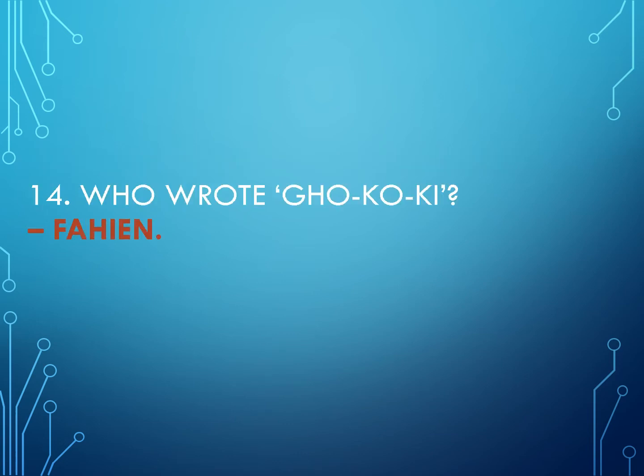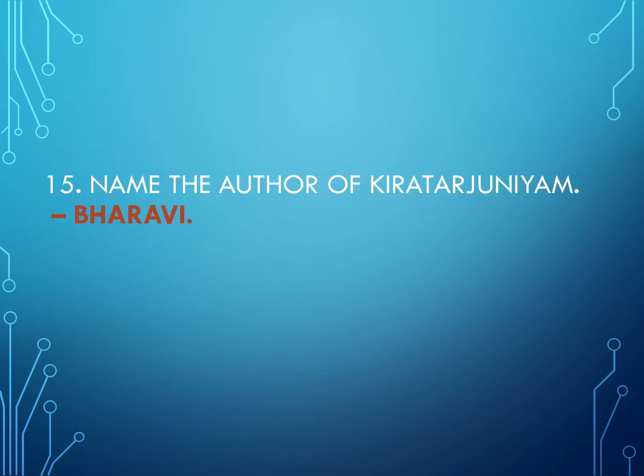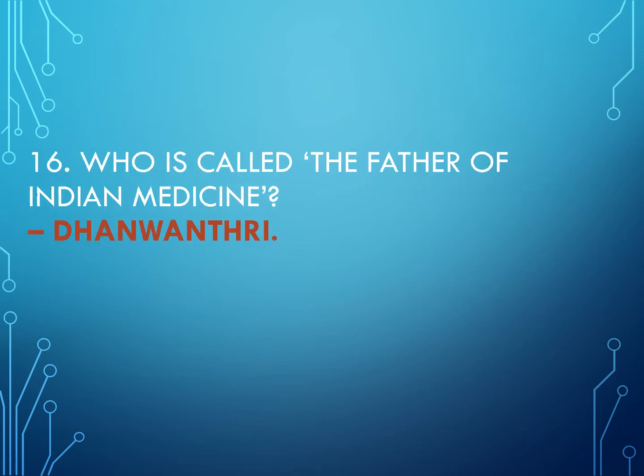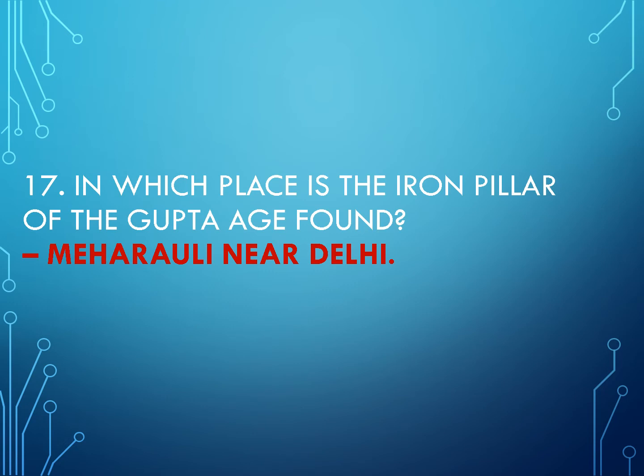Who wrote the Gu Ji (travel account)? Answer: Faheen. Name the author of Kiratarjuniya. Answer: Bharavi. Who is called the father of Indian medicine? Answer: Dhanvantri. In which place is the iron pillar of the Gupta age found? Answer: Mehrauli near Delhi.